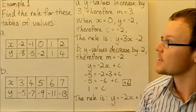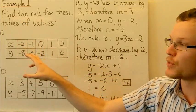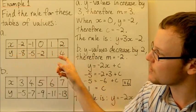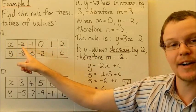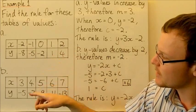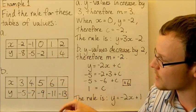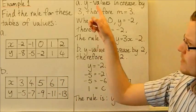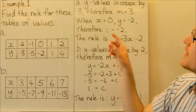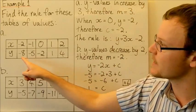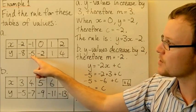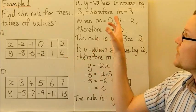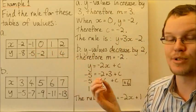Let's look at some other examples where we're finding the rule from tables of values. For problem A, the x values are increasing by 1 each time. The y values increase by 3: negative 8, plus 3 is negative 5, plus 3, plus 3, plus 3. So m is equal to 3.